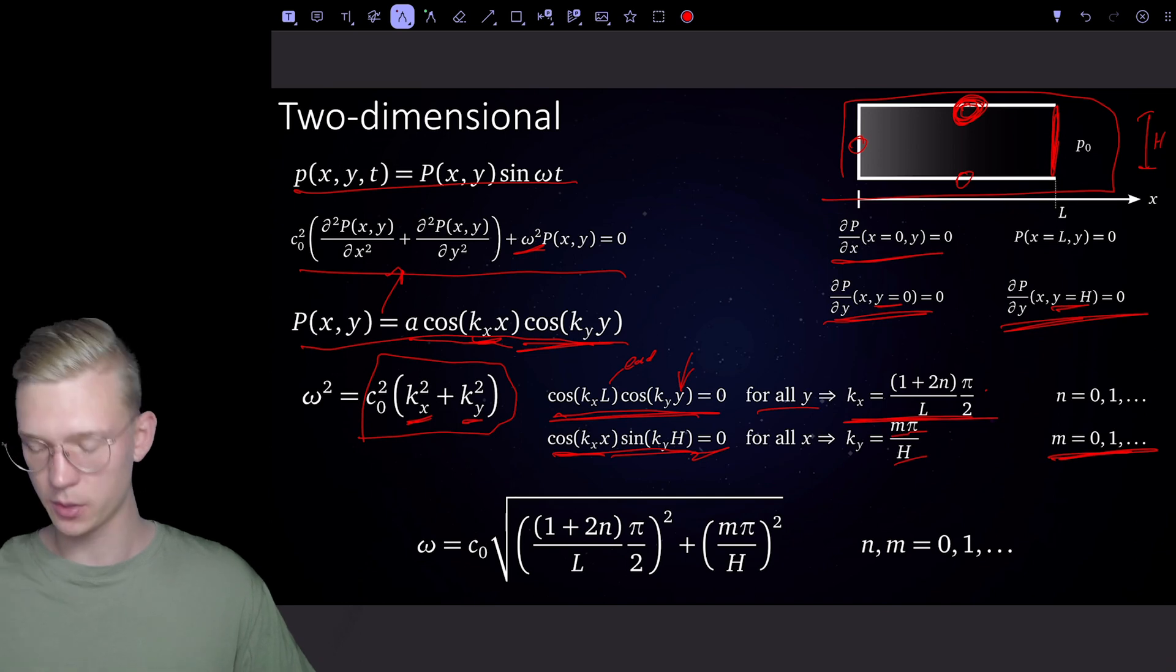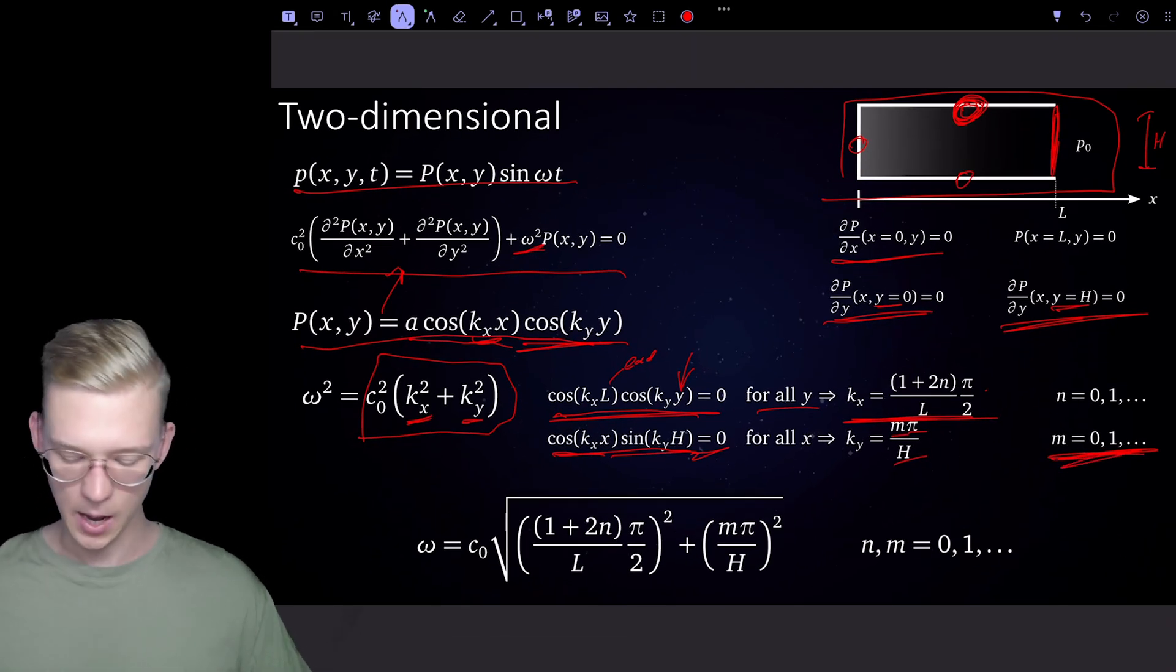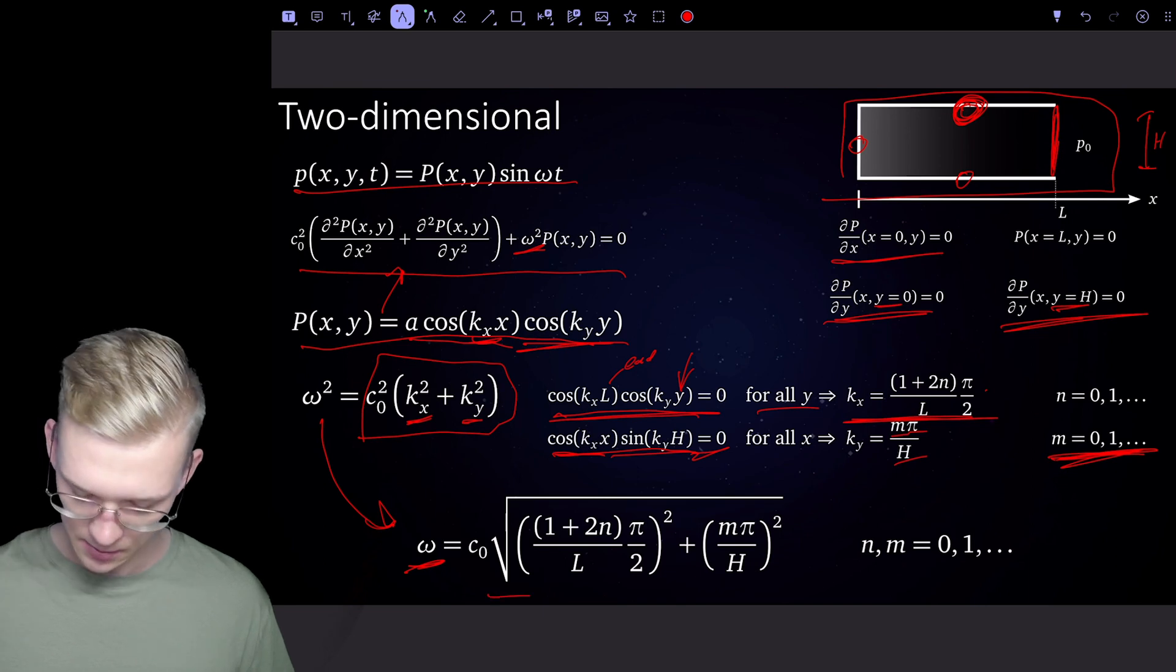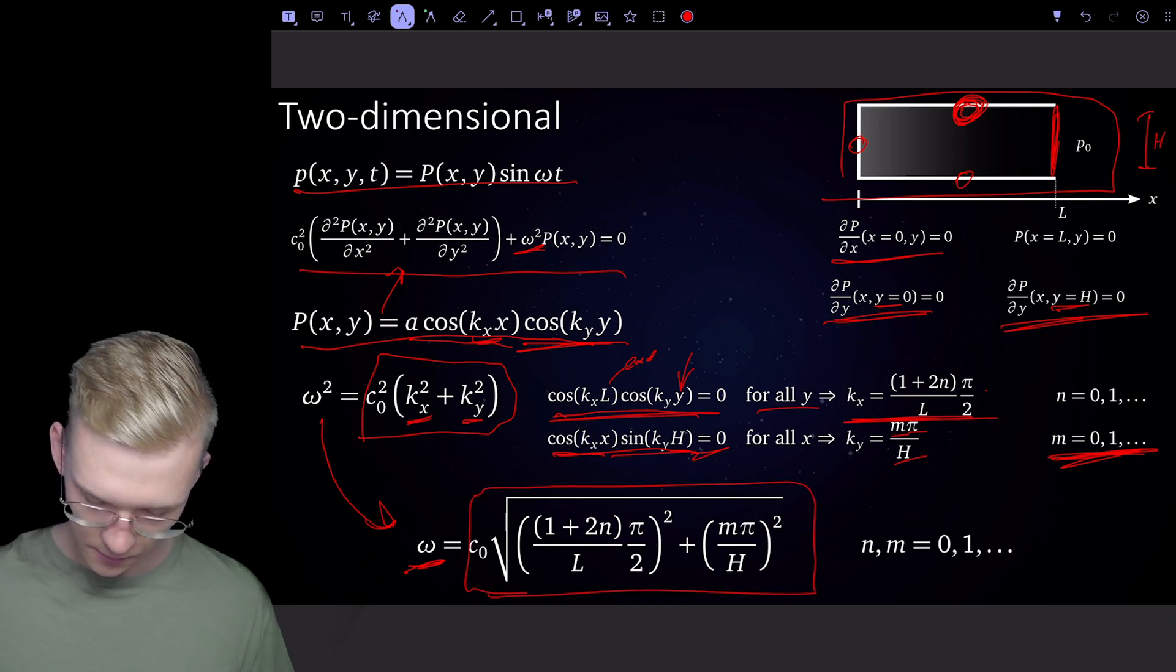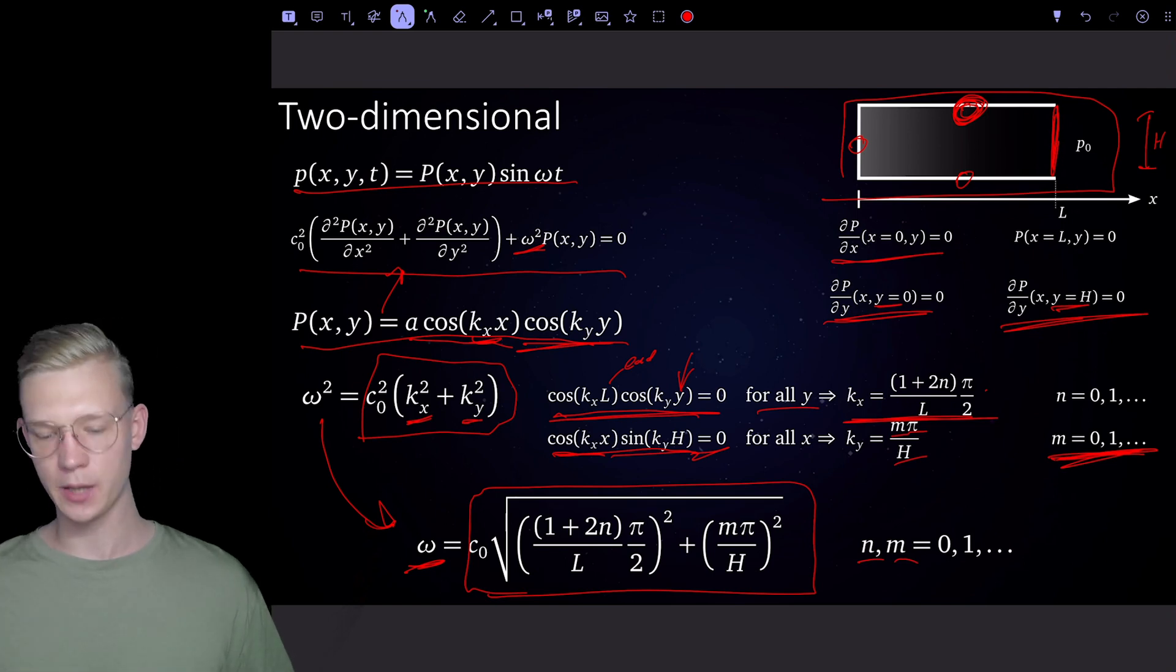And m is not the mass, don't confuse it with the mass, it's the order. And now we know that we can get the eigenfrequency just by inserting our found k's, and we will have these terms for our eigenfrequency. And for each m and n, we will find a solution.